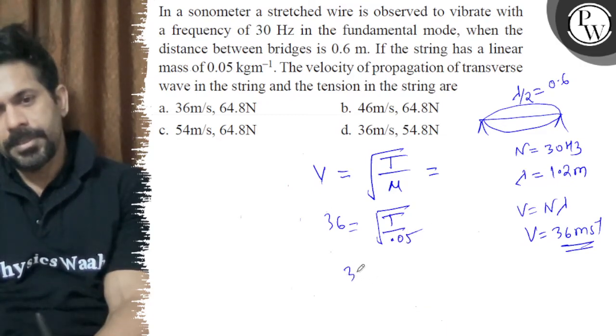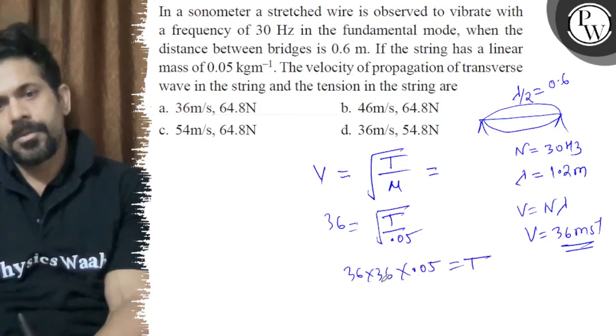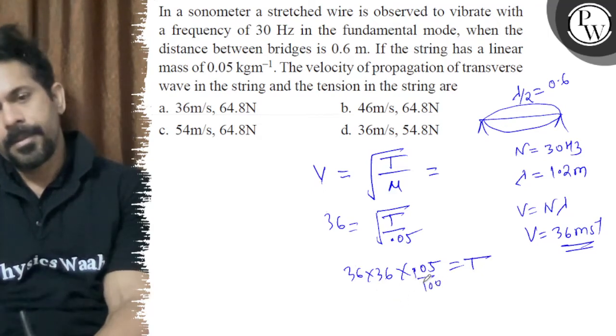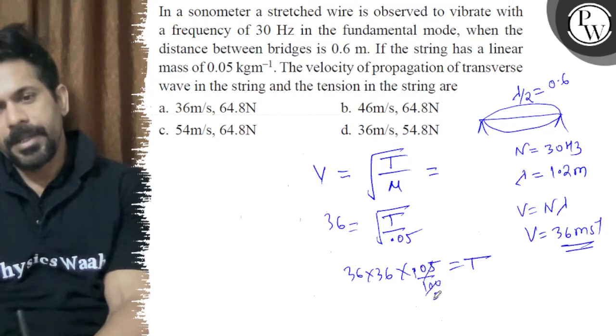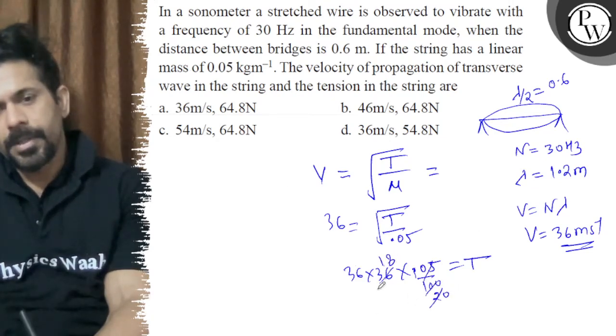So 36 times 36 times 0.05 is equal to T.